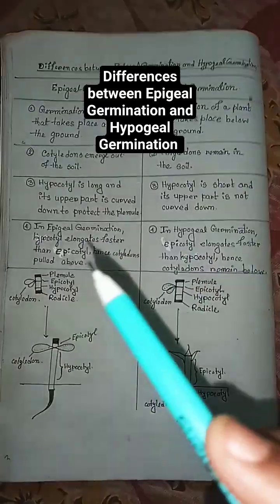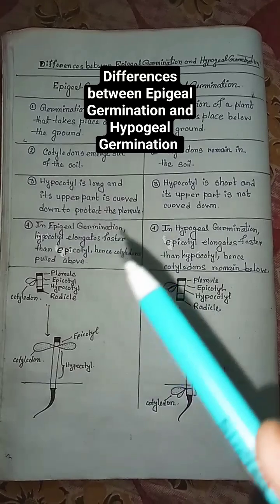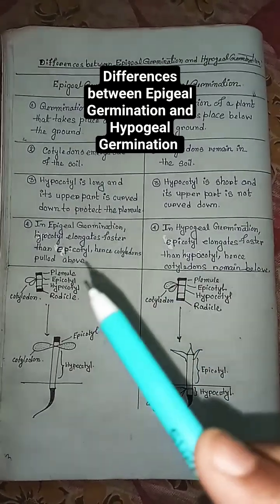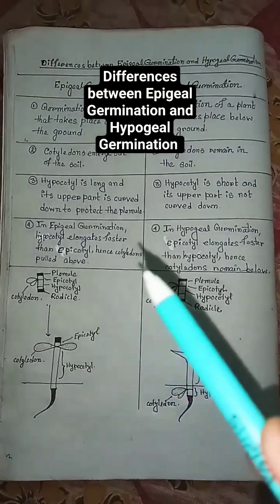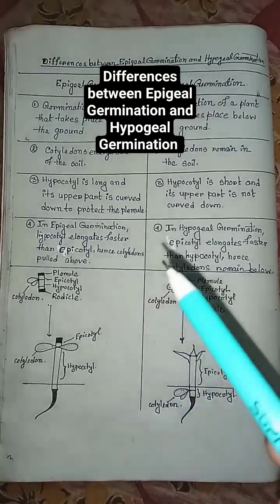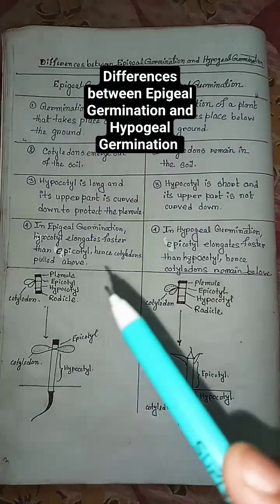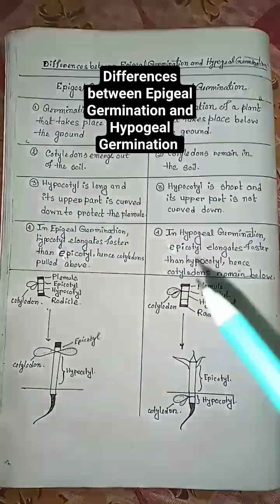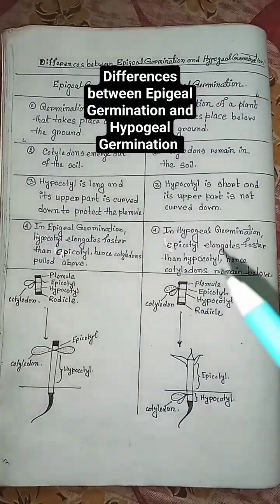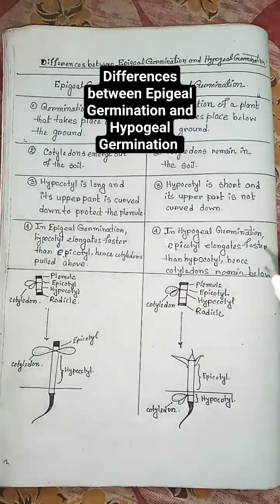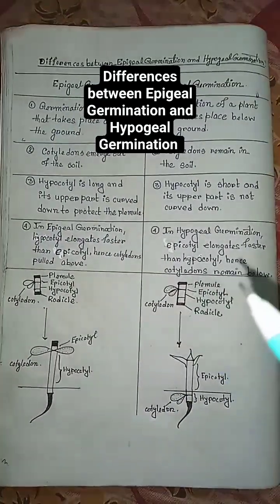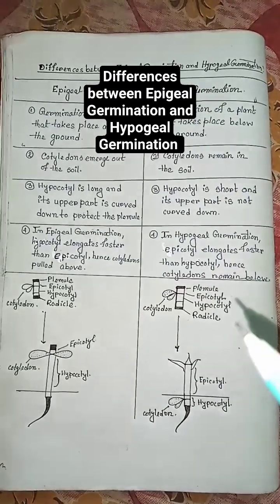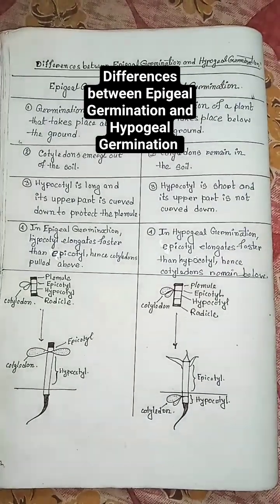In epigeal germination, the hypocotyl elongates faster than the epicotyl, hence cotyledons are pulled above. In hypogeal germination, the epicotyl elongates faster than the hypocotyl, hence cotyledons remain below.